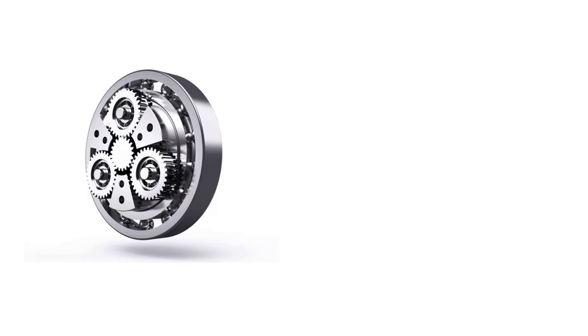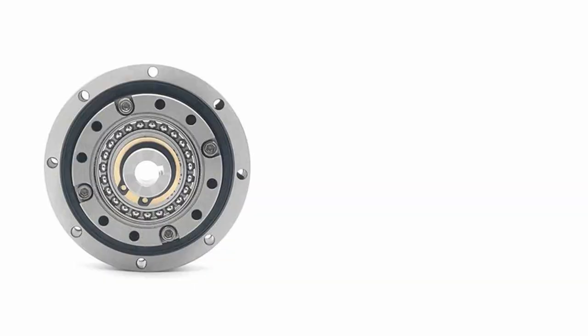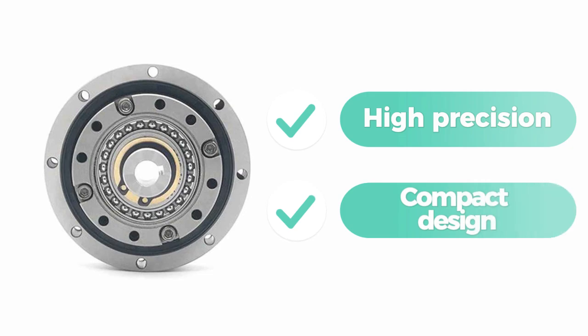In summary, planetary reducers excel in scenarios demanding high torque output, efficiency, and durability, while harmonic reducers are suitable for applications requiring high precision and compact design.